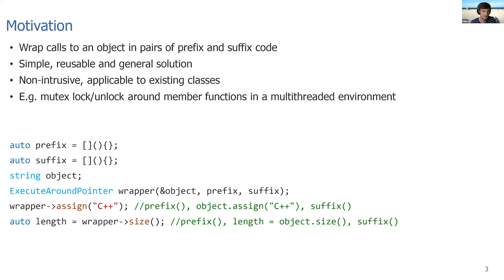I put some code here showing how it should look like. We have the prefix action which can be a function or Lambda object, and the suffix object which is also a Lambda. We're going to wrap a std::string. Then we create an execute around pointer which takes a raw pointer, the prefix action, and the suffix action. Now if we call functions on the wrapper with the arrow operator, like wrapper->assign, the compiler will turn that into calling the prefix, calling object.assign, and calling the suffix afterwards.